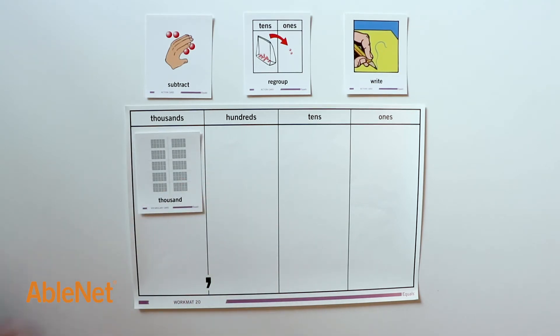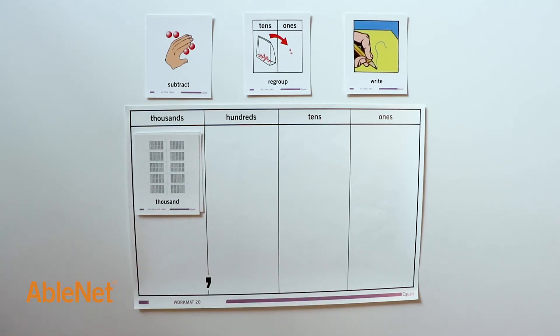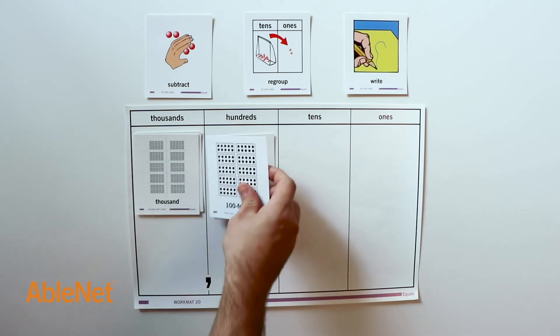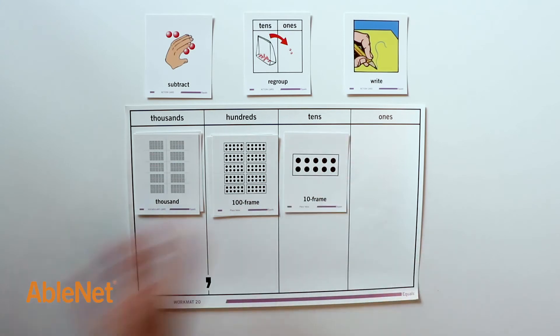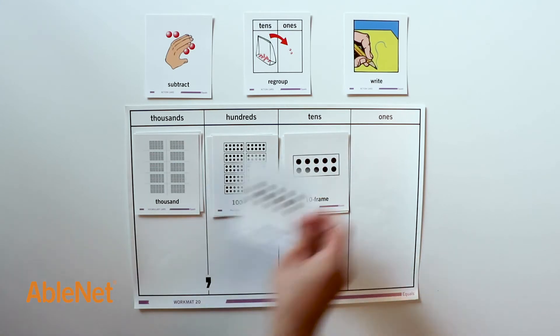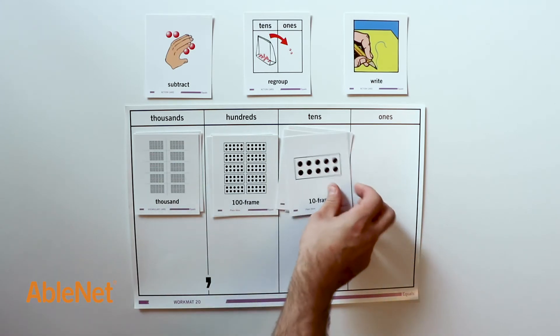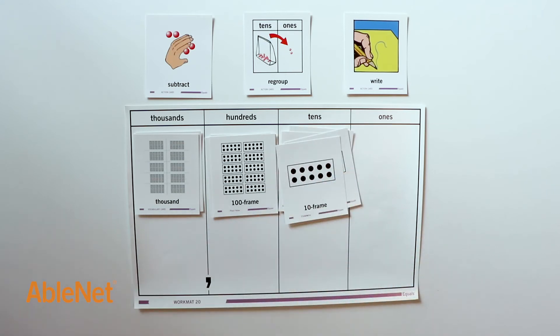I will start by placing our first amount of 2,350 on the place value chart: 1,000, 2,000, 100, 200, 300, 10, 20, 30, 40, 50. Before we subtract 470, we need to check to see if we need to regroup. There is no need to regroup in the ones place. We do need to regroup in the tens and hundreds places.